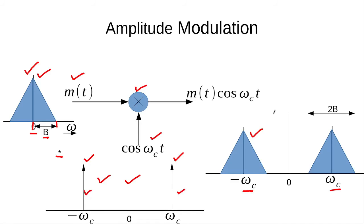This is our amplitude modulated signal in the frequency domain. The modulated signal is located at omega_c, and since it is to the right of 0 Hz, we measure the bandwidth from the null point on one side to the other. In this case the bandwidth of the signal is 2b, meaning that after modulation the bandwidth doubles in the case of amplitude modulation.